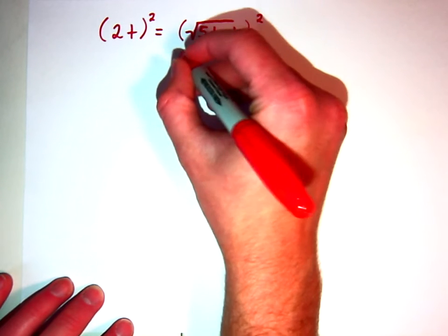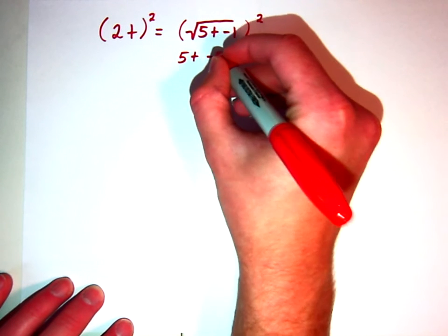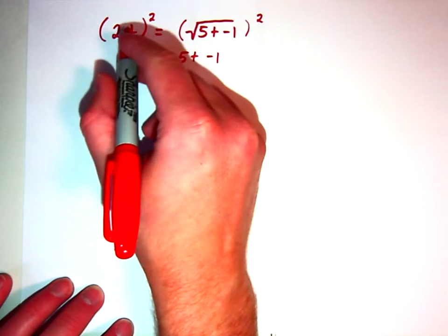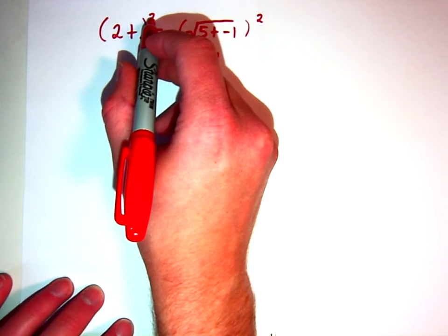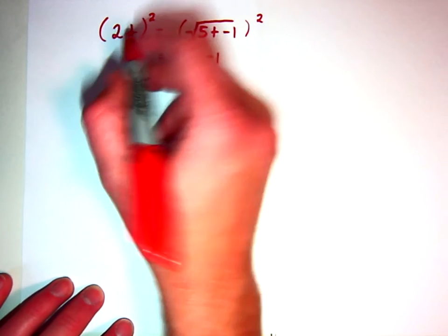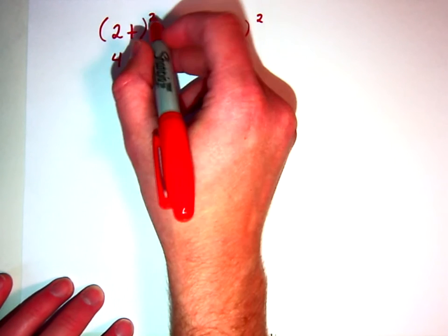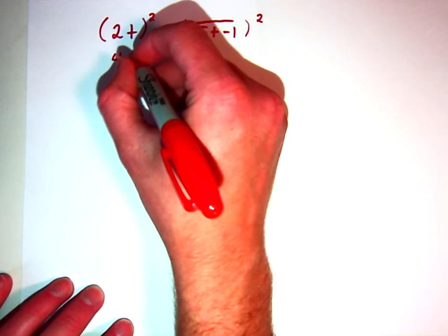So, over on the right side of our equation, we end up with 5t minus 1. And over here, well, to the second power goes to the coefficient. So, 2 squared is 4. And t squared, well, it is t squared.